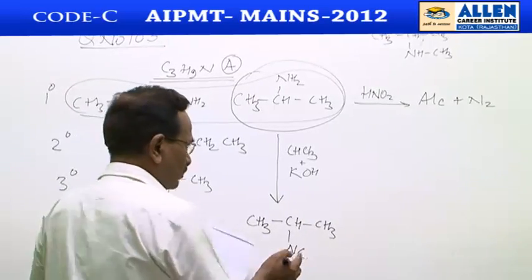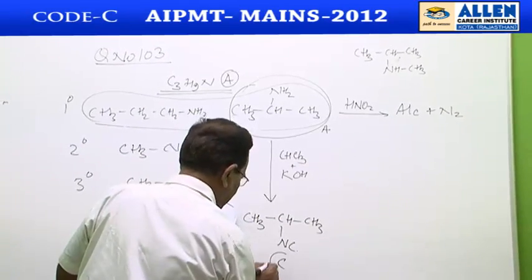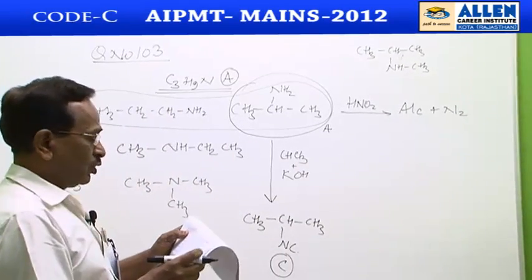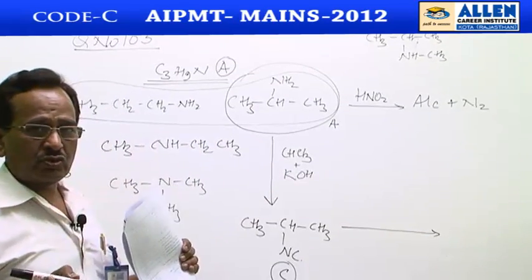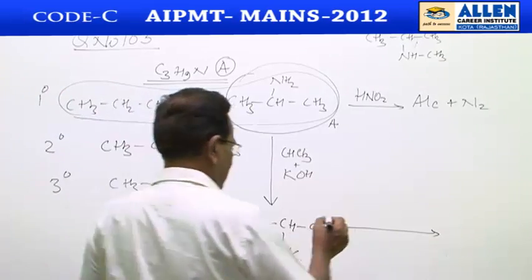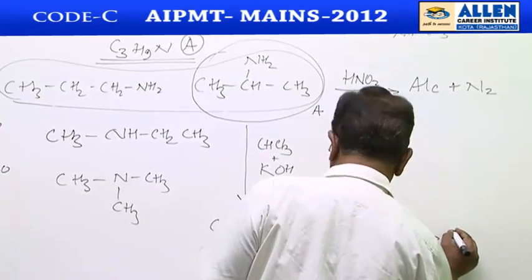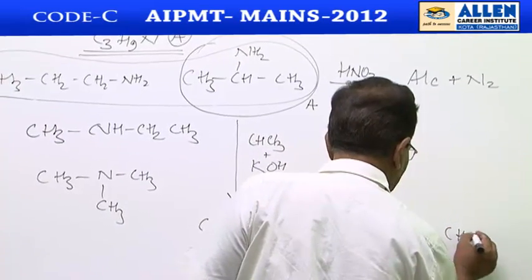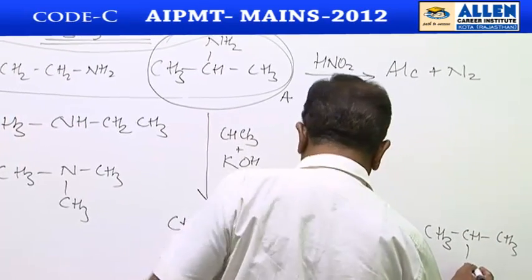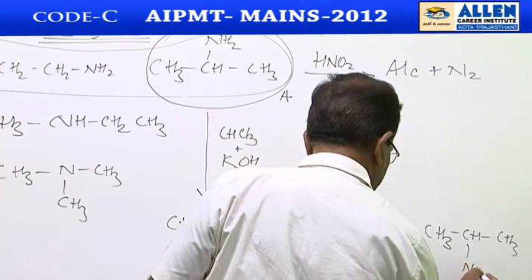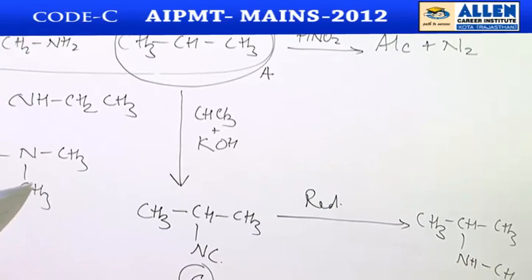Next, this compound C, which on reduction gives isopropylamine. You know isocyanide on reduction gives a secondary amine. On reduction of isopropyl isocyanide it gives CH3CHCH3NHCH3, which is isopropylmethylamine, a secondary amine.